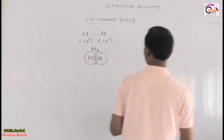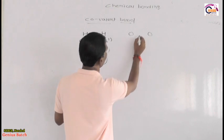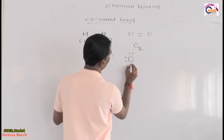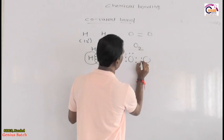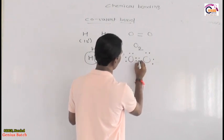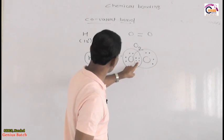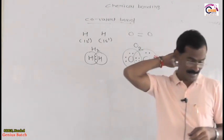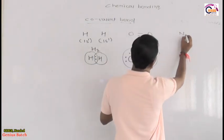For example, consider the O₂ molecule. Oxygen has 6 valence electrons. When two oxygen atoms share electrons, the total number of electrons around each oxygen atom becomes 8 (4 + 2 + 2). This sharing is what forms the covalent bond. The O₂ molecule has a double bond — the bond formation takes place by mutual sharing of electrons.